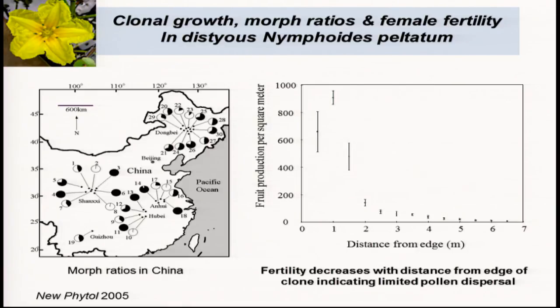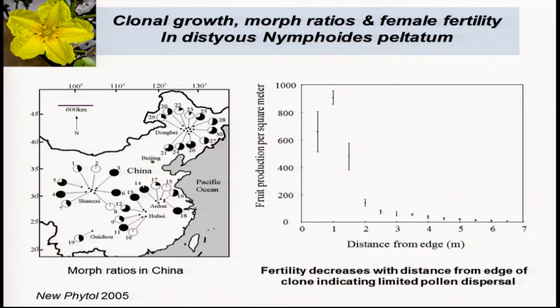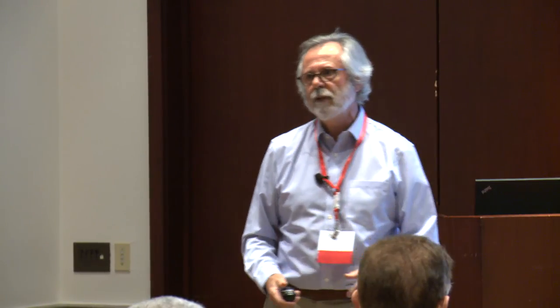Let's look at one species in China, Nymphoides peltata, which we worked on several years ago. Because this is an aquatic plant with mechanisms of dispersal in water, when we look at the floral morphs — in this case there should be two within a population — the equilibrium expectation based on negative frequency-dependent selection is one-to-one. What we can see is that hardly any of these populations are close to one-to-one. Note there are some that are monomorphic — clonality and dispersal of propagules can result in populations being monomorphic for this mating type, and in those populations there is no seed set because these plants are self-incompatible.